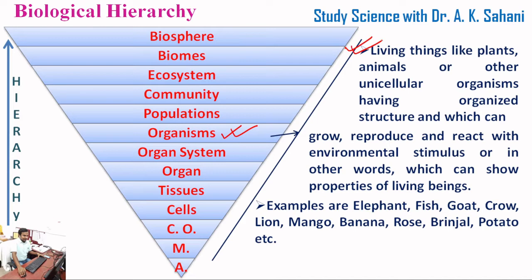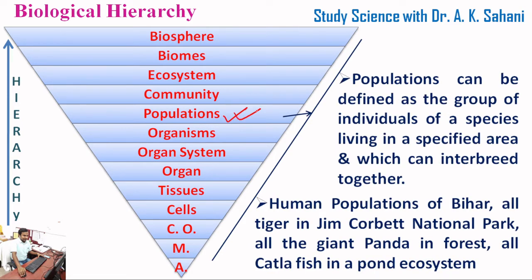The next level is organisms — living things like plants, animals, or other unicellular organisms having organized structure, which can grow, reproduce, and react to environmental stimuli, i.e., which can show properties of living beings. Examples of organisms are elephant, fish, goat, crow, lion, mango, banana, rose, brinjal, potato, etc.